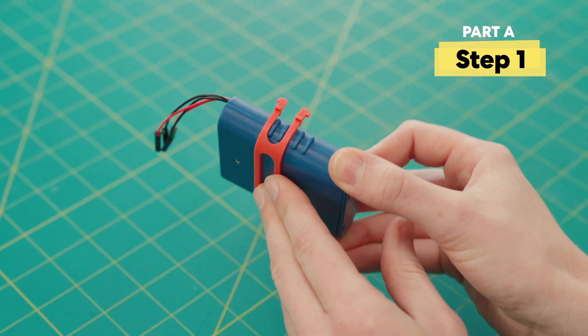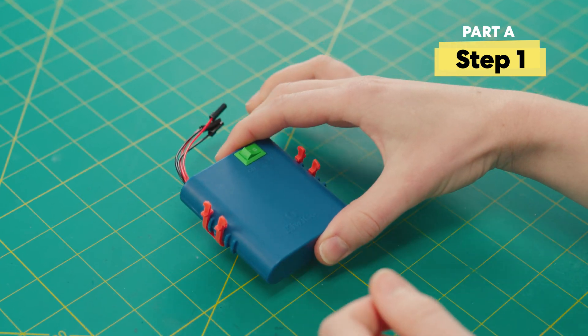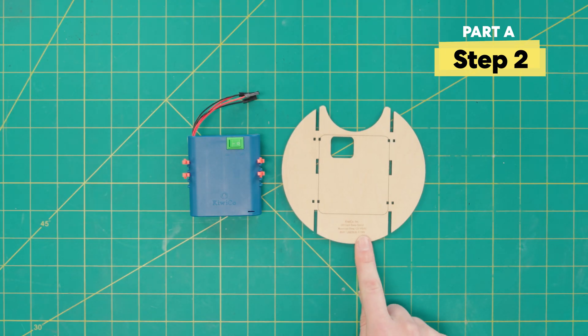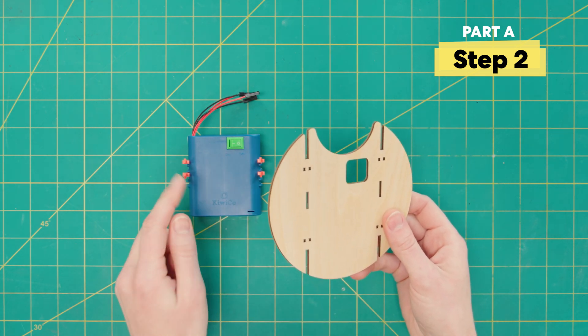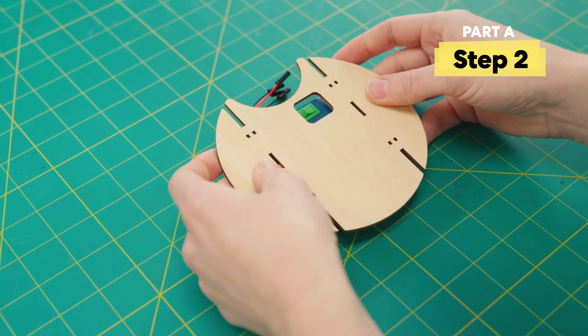Make sure it sits right there. Next grab this wood piece, and we're going to slide the prongs of this clip into this slot right here. Just line it up on top, squish down, and they should pop in.